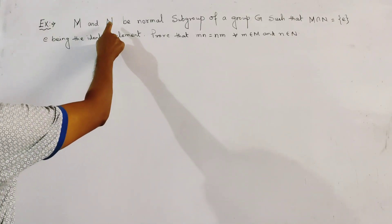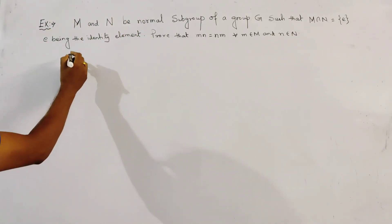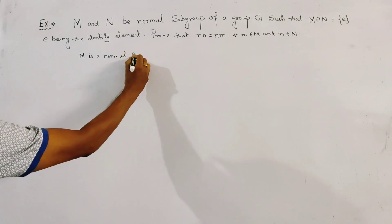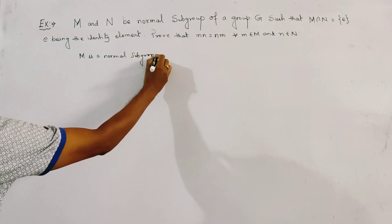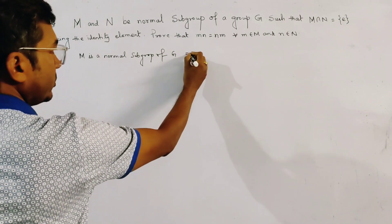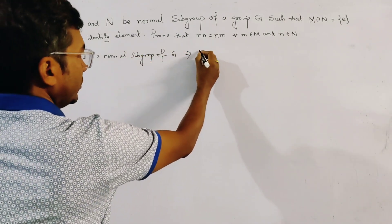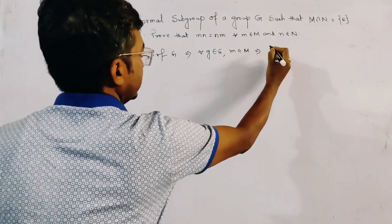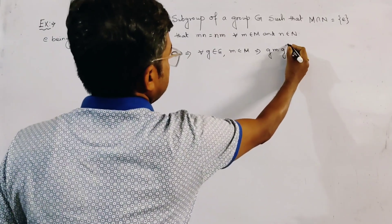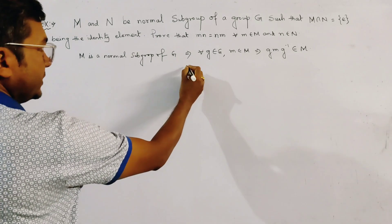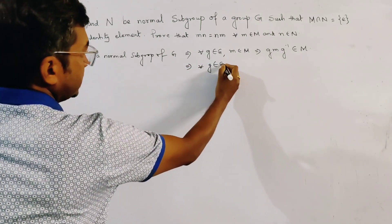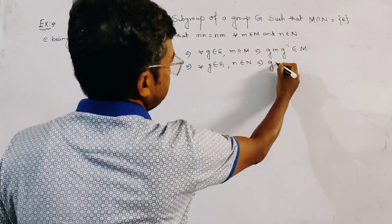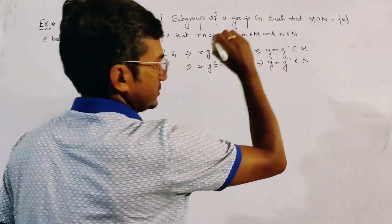First, let us recall what a normal subgroup is. Since M is a normal subgroup of G, for all g in G and m in M, we have g·m·g⁻¹ belongs to M. Similarly, since N is a normal subgroup of G, for all g in G and n in N, we have g·n·g⁻¹ belongs to N.